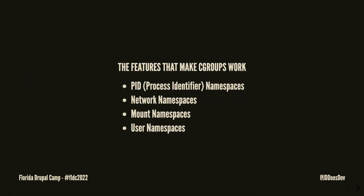What makes C groups work? We've got PID namespaces, network namespaces, mount namespaces, and user namespaces. PID — process identifier — ensures that processes within one namespace are not aware of processes in other namespaces, so they're contained. Network namespaces isolate network interface controllers, IP tables, routing tables, and other networking tools. Mount namespaces are where file systems are mounted so that the file system scope is limited only to the directory that's mounted. User namespaces limit users within a namespace to only that namespace, avoiding user ID conflicts — the users are contained.